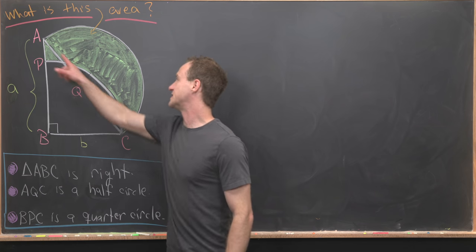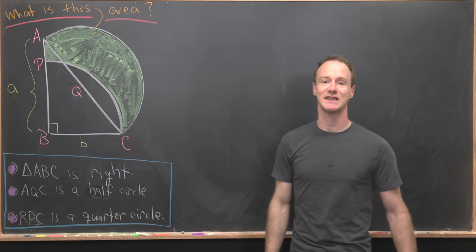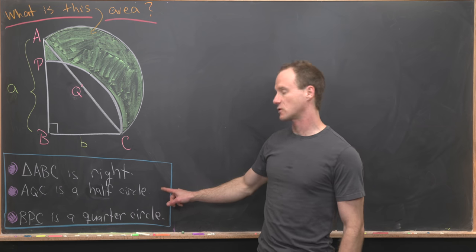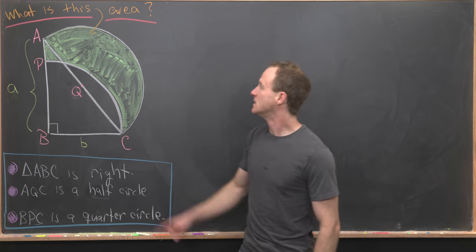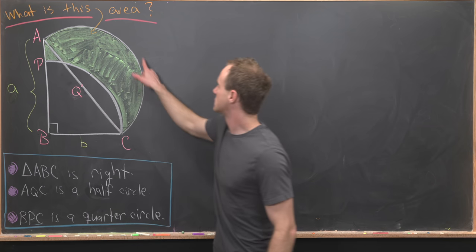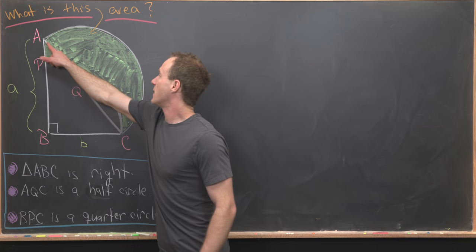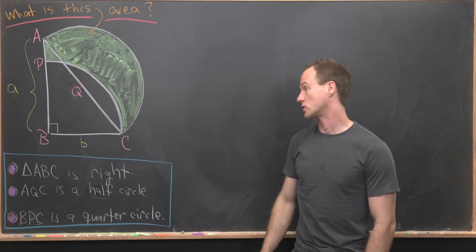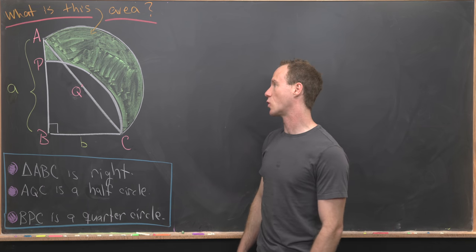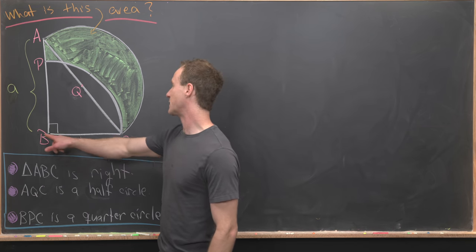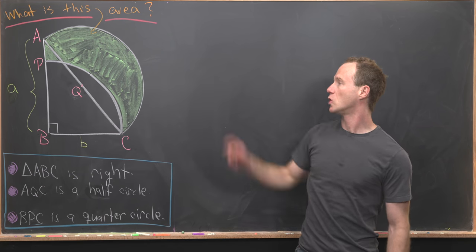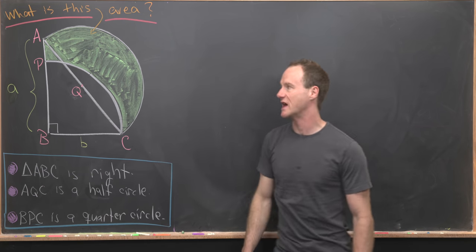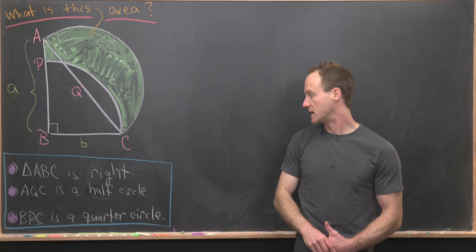Then we put a point Q which is the midpoint of AC, and we can form a semicircle or half circle AQC. Then BPC is a quarter circle, so that's this bit right here. Our goal is to find this area which I have shaded in light green.